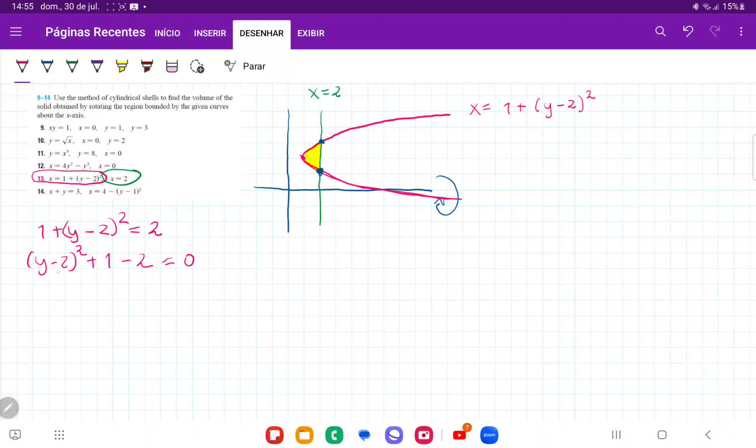Now I'm going to expand the first term. So I have that y² - 4y + 4 + 1 - 2 is equal to 0. So y² - 4y + 3 is equal to 0. Now I have to factor it, and this factors into (y-3)(y-1). Therefore, y is equal to 1 and 3.